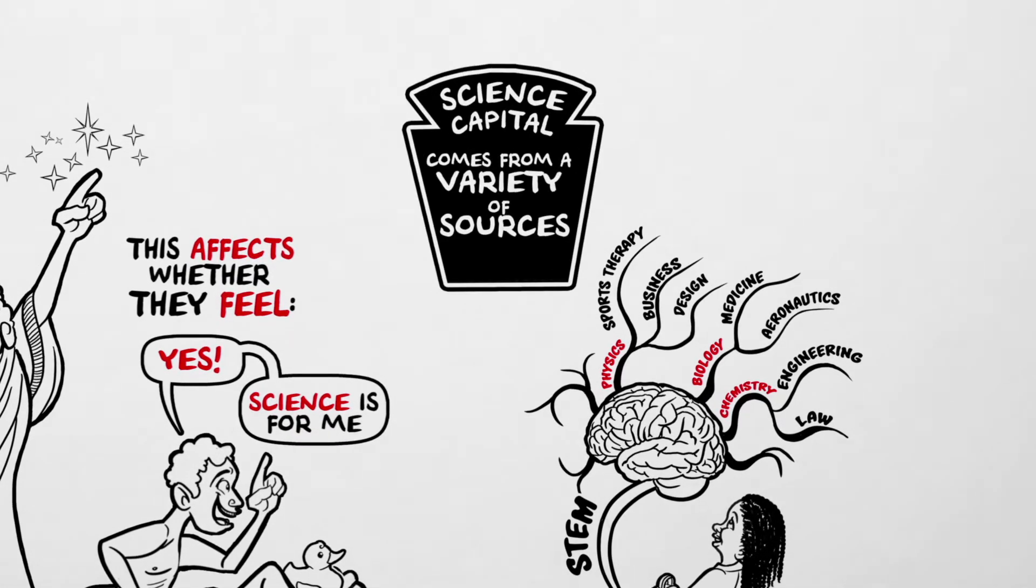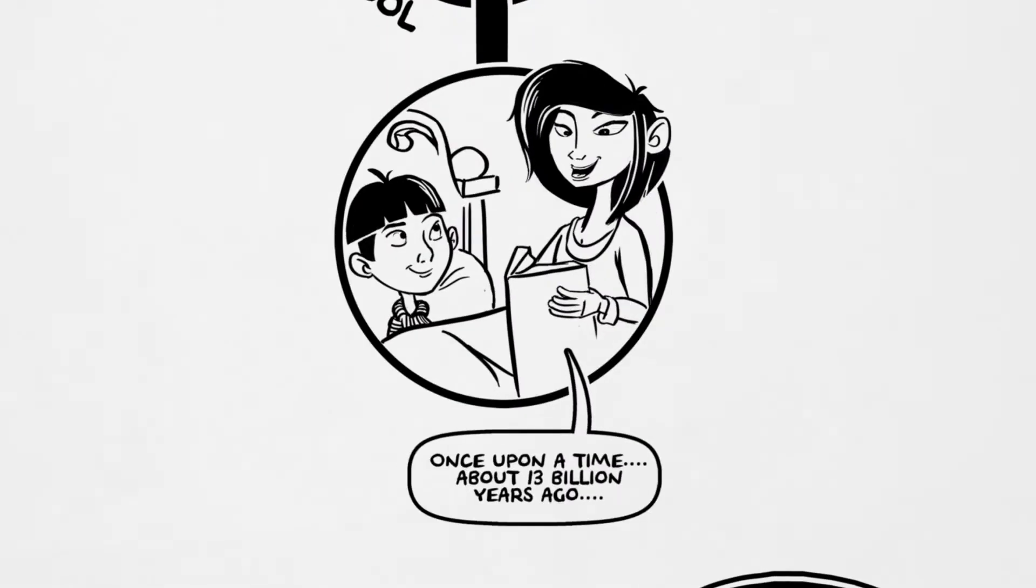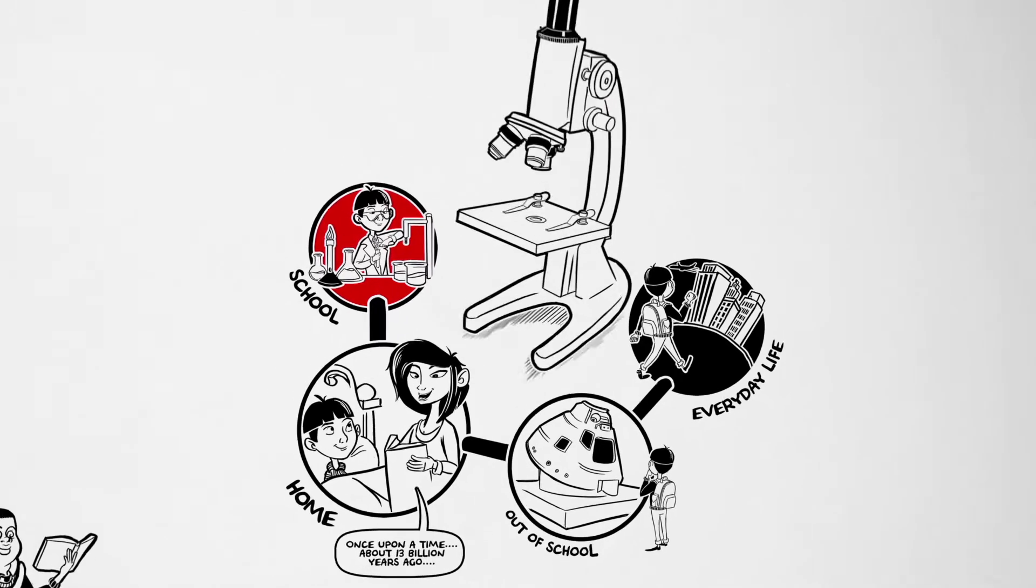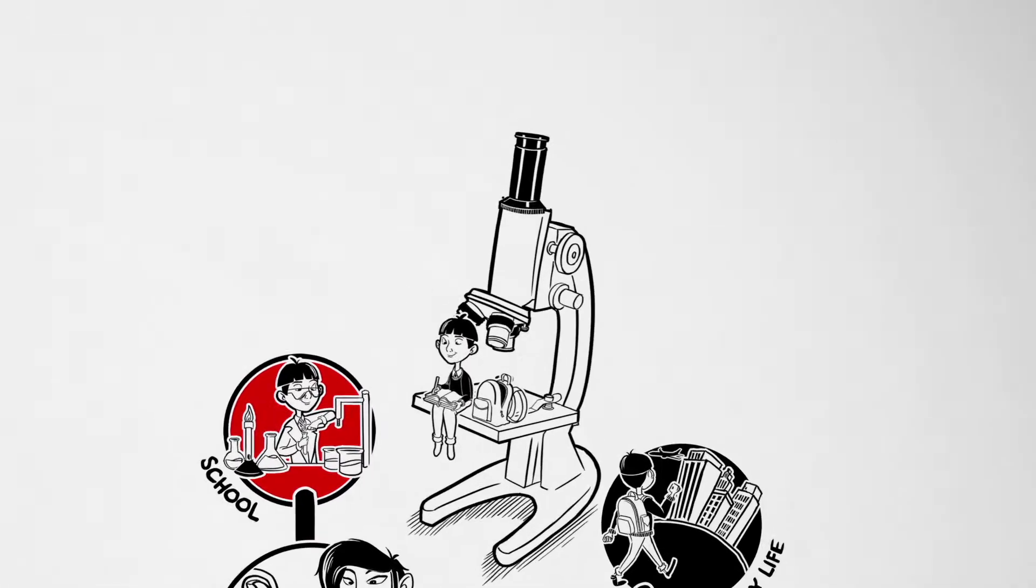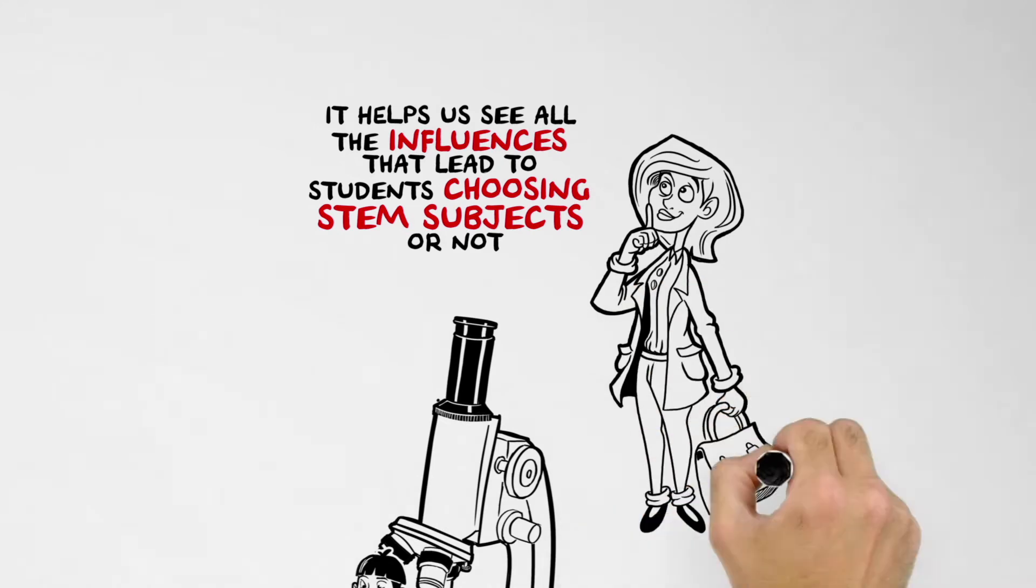Science capital comes from a variety of sources, including school, home and family, out-of-school science learning and the things people experience in their everyday lives. It helps us see all the influences that lead to students choosing STEM subjects or not.